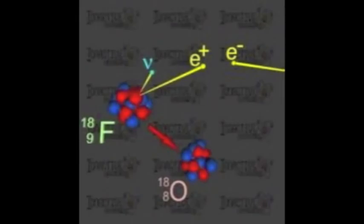Fluorine-18 is radioactive and decays by emitting a positron. It has a half-life of about 110 minutes. The FDG collects in areas of high glucose metabolism and gives off radiation. The radiopharmaceutical is injected into the arm of the patient and in less than an hour it will have collected in certain parts of the body.